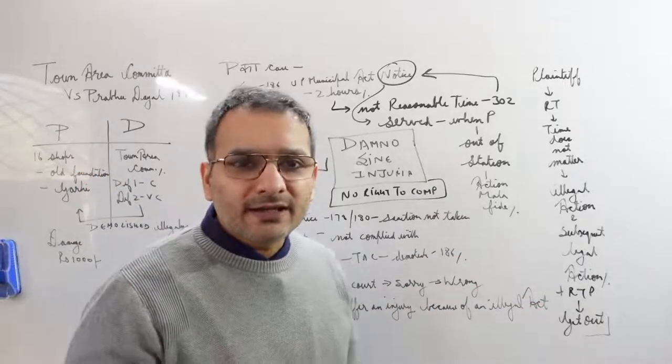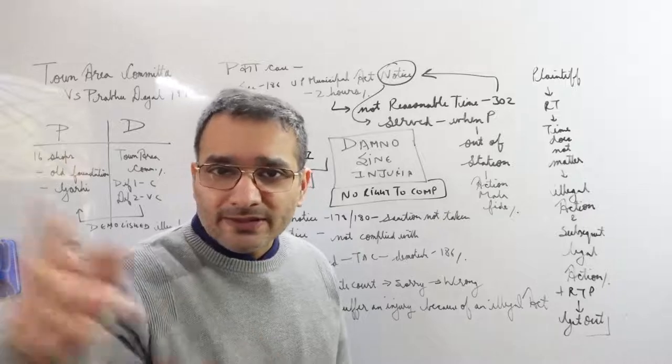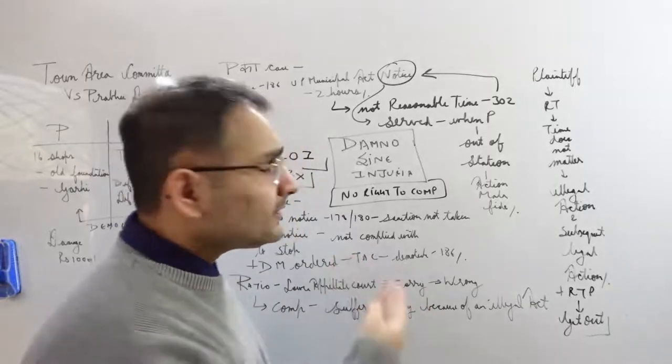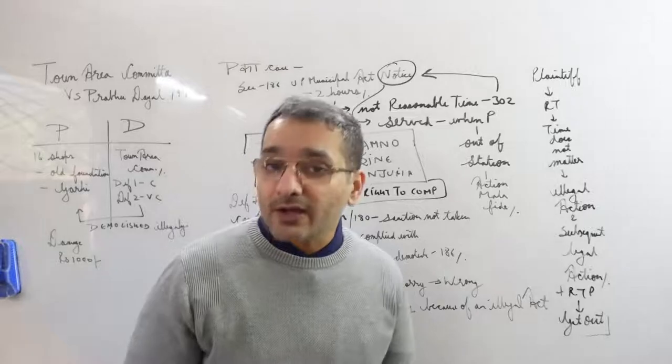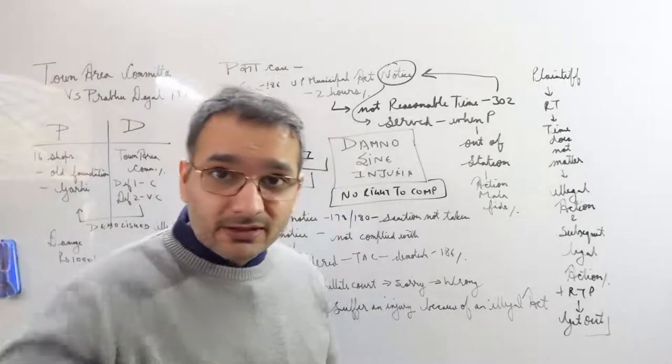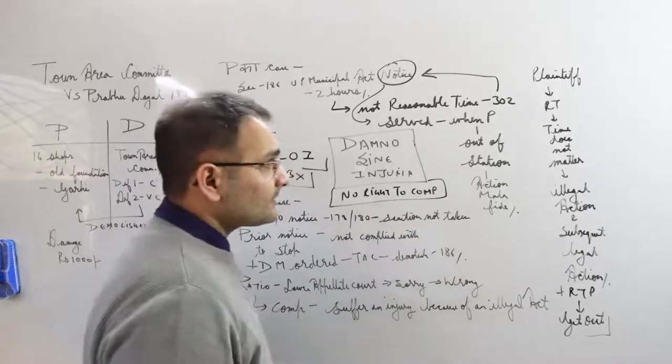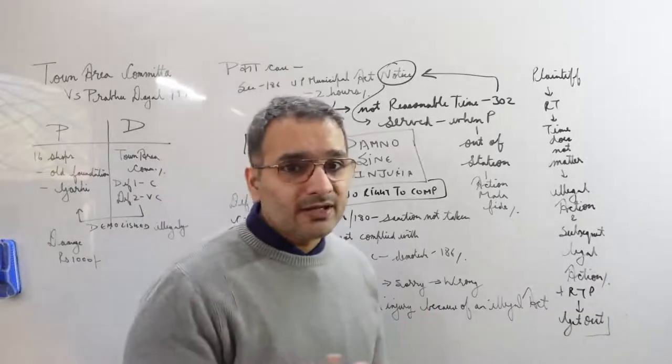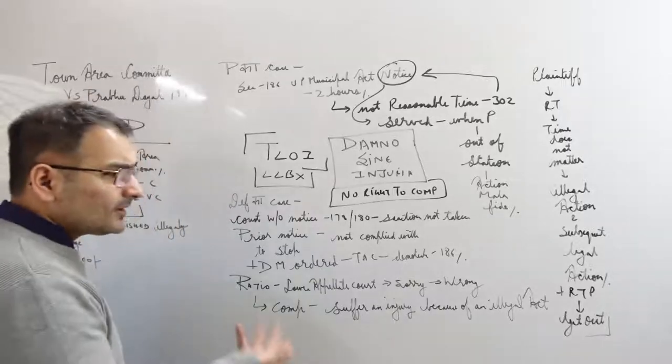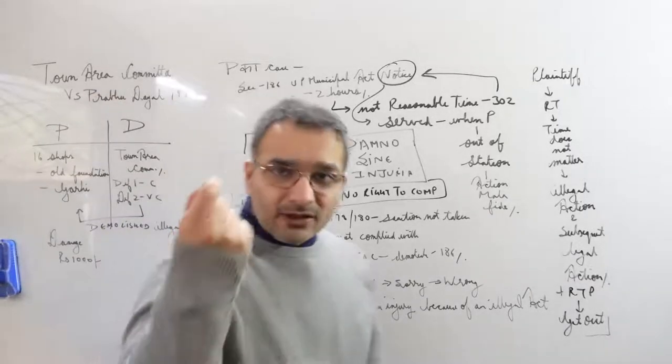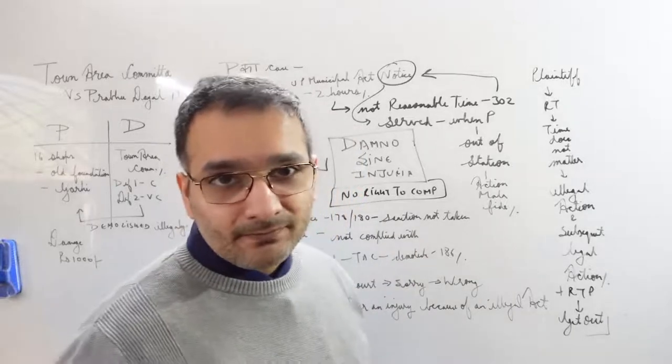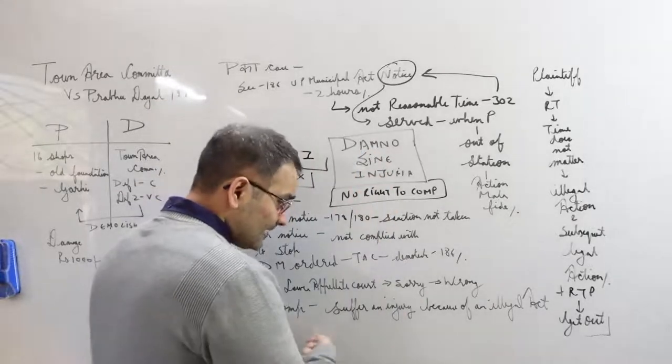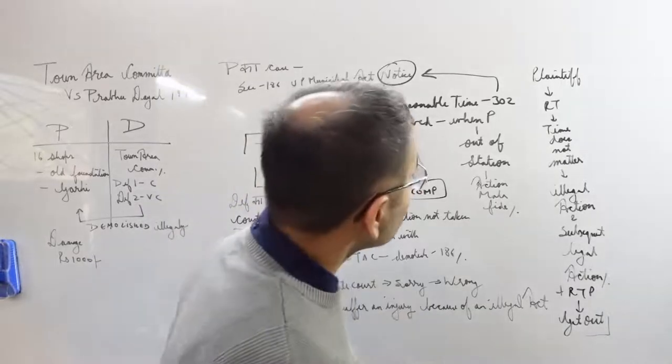In the Damno Sine Injuria concept, you don't have any right to compensation if you have not suffered a legal injury. You have suffered a damage - your shops have been demolished - but have you suffered a legal injury? Ubi jus ibi remedium - if there is a right there is a remedy. If there is a right here, you have not. What remedy shall we give you? So Damno Sine Injuria - you don't have any right to compensation here. I really don't know how the lower appellate court gave such a decision. Why have you been taught this case law? What is the purpose? So that you understand the concept of Damno Sine Injuria, and you have to write this line: that you are entitled to compensation if you suffer an injury because of an illegal act.